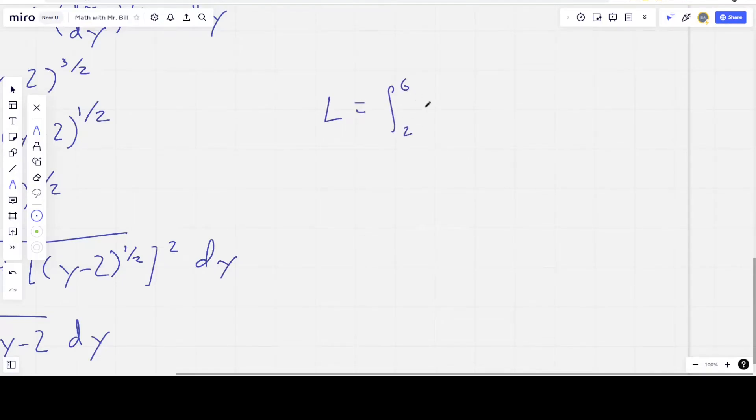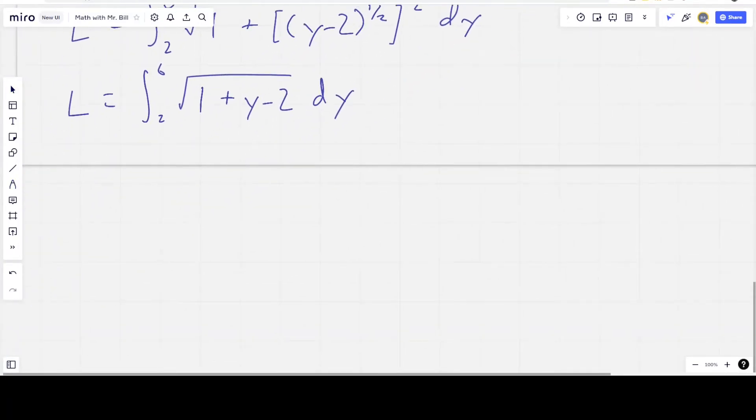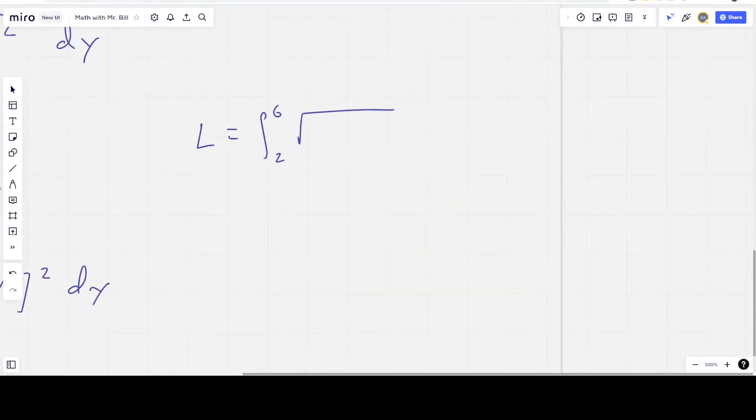So the 1 minus 2 becomes negative 1. And so this is just the integral of the square root of (y - 1). This is the integral of (y - 1) to the 1/2. And I think we've done this enough now. We can kind of just jump right to it.